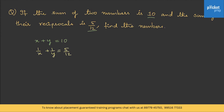Let me simplify: 1/x + 1/y can be written as (x + y) / (xy) = 5/12. Substituting x + y = 10, we get 10 / (xy) = 5/12, so xy = 24. Now to solve further, let me use another formula.